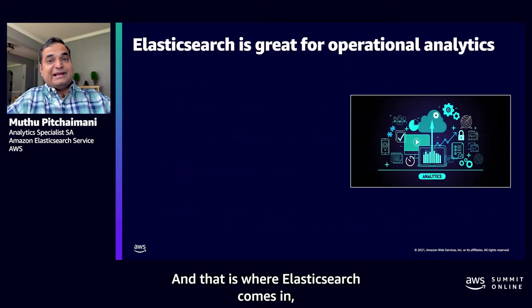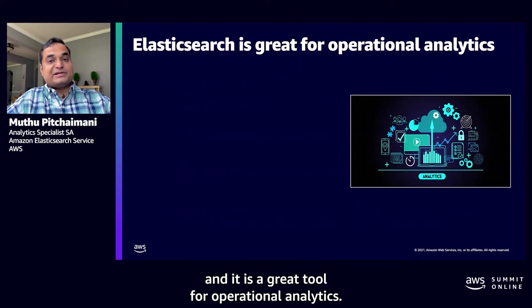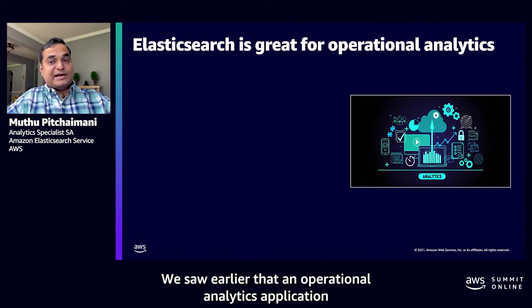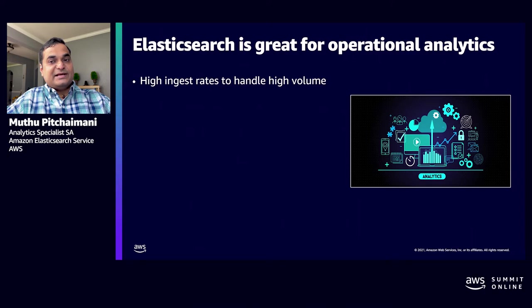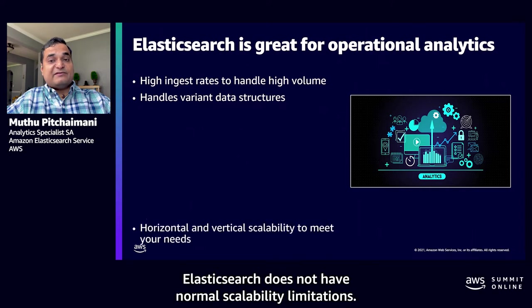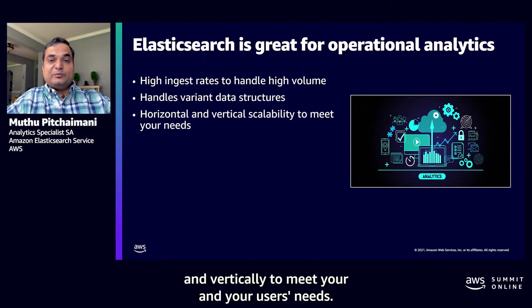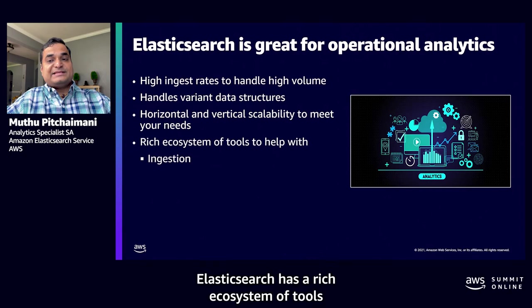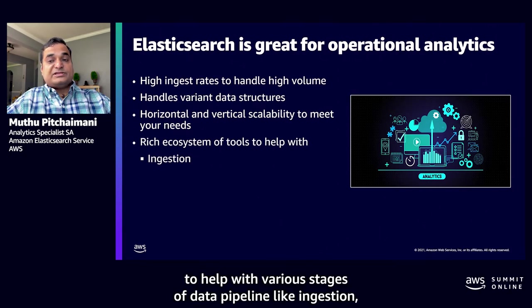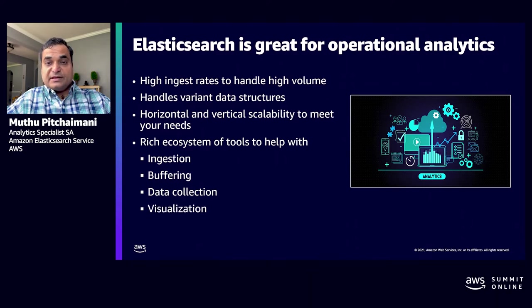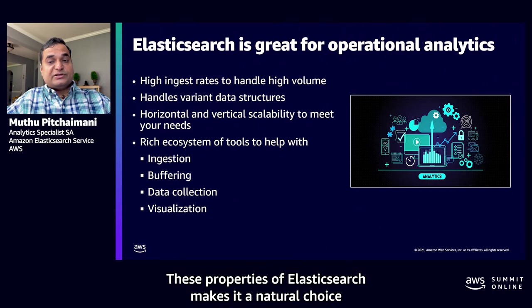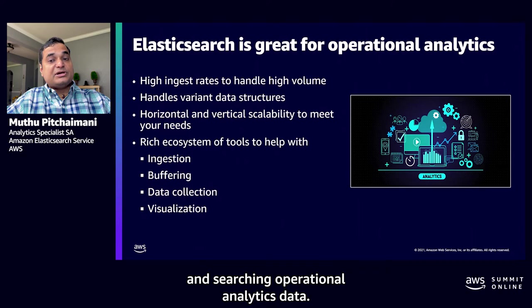That is where Elasticsearch comes in as a great tool for operational analytics. It can handle high volumes of data at very high ingestion rates, and has the ability to handle varying data structures. Unlike traditional database systems, Elasticsearch does not have normal scalability limitations — it can scale both horizontally and vertically. Elasticsearch has a rich ecosystem of tools to help with various stages of the data pipeline like ingestion, buffering, data collection, and visualization. These properties make it a natural choice for collecting, storing, aggregating, and searching operational analytics data.